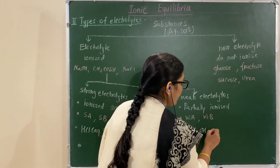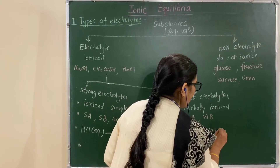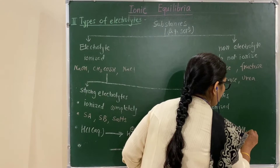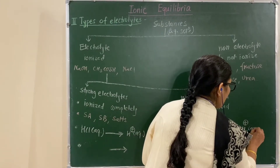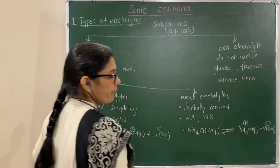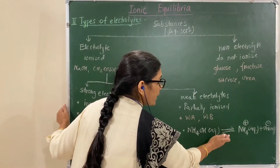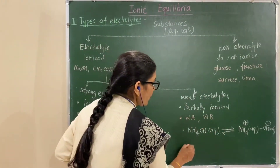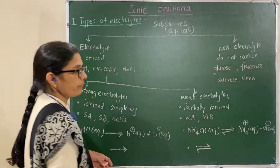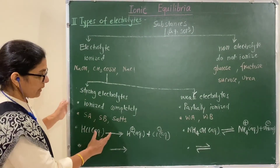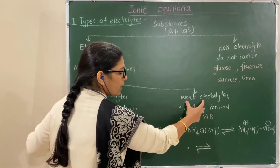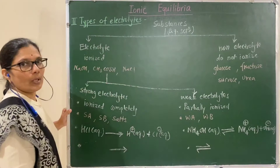Consider NH₄OH (ammonium hydroxide) dissolved in water — it partially ionizes, meaning equilibrium exists between the ions and the undissociated molecule. The reaction does not go to completion, so we show a double-headed arrow. For strong electrolytes — complete ionization, single arrow. For weak electrolytes — partial ionization, double-headed arrow.